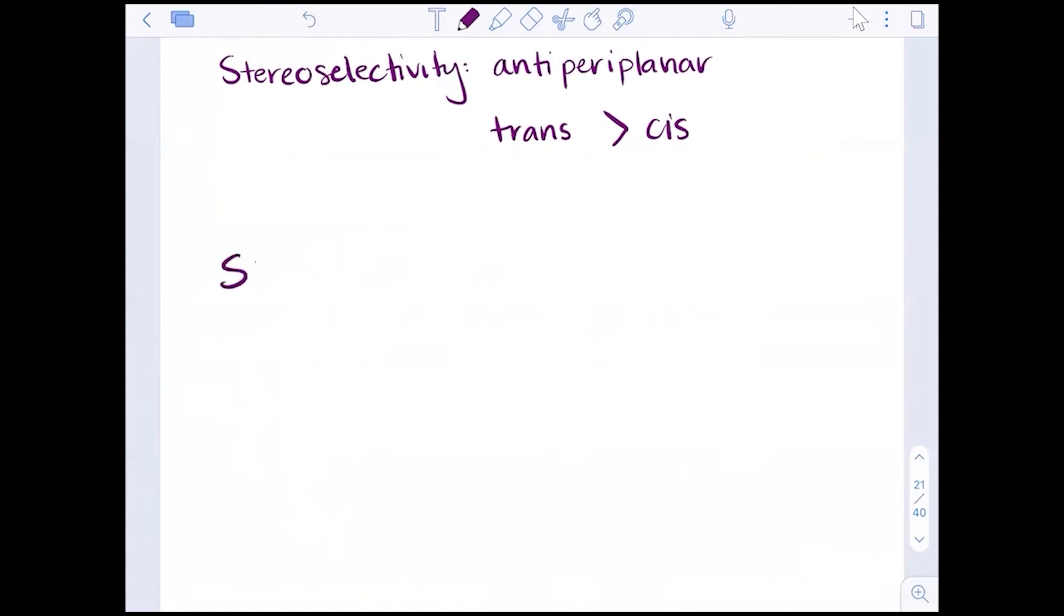We also have another word we're going to introduce here, stereospecificity. That again is that antiperiplanar nature. There is a specific orientation that will result in the possibility of only one product. So I want to draw this molecule for us first.